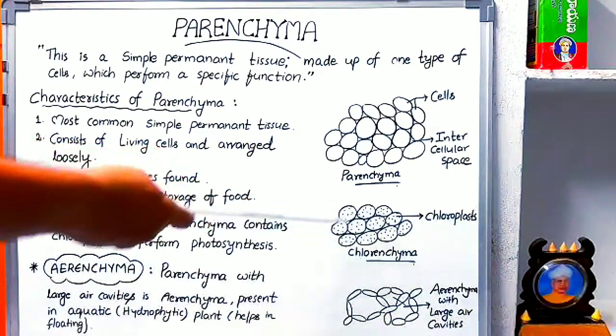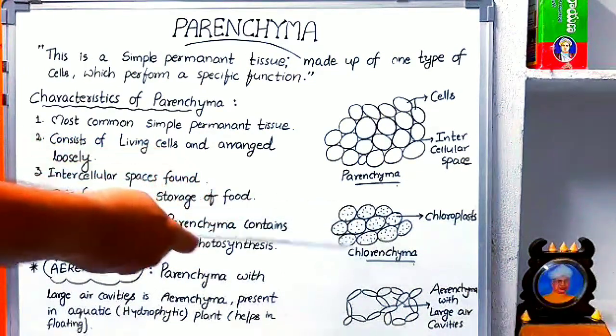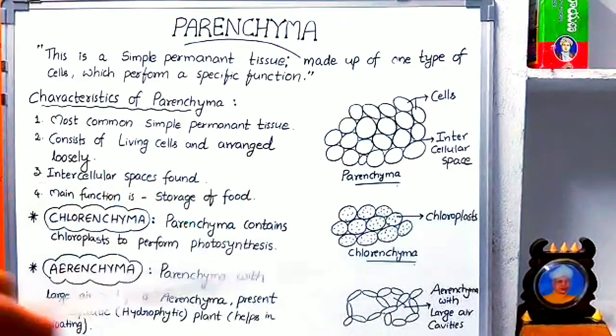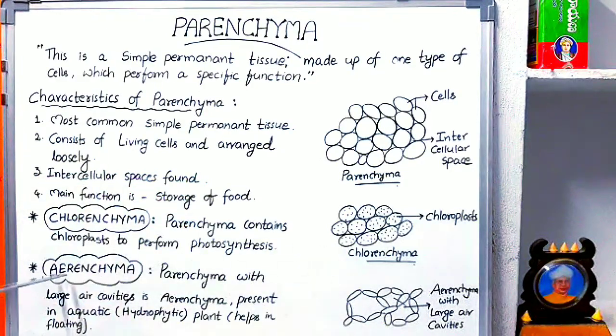For example, in this diagram you can see parenchyma cells which consist of chloroplasts — so this is called chlorenchyma.